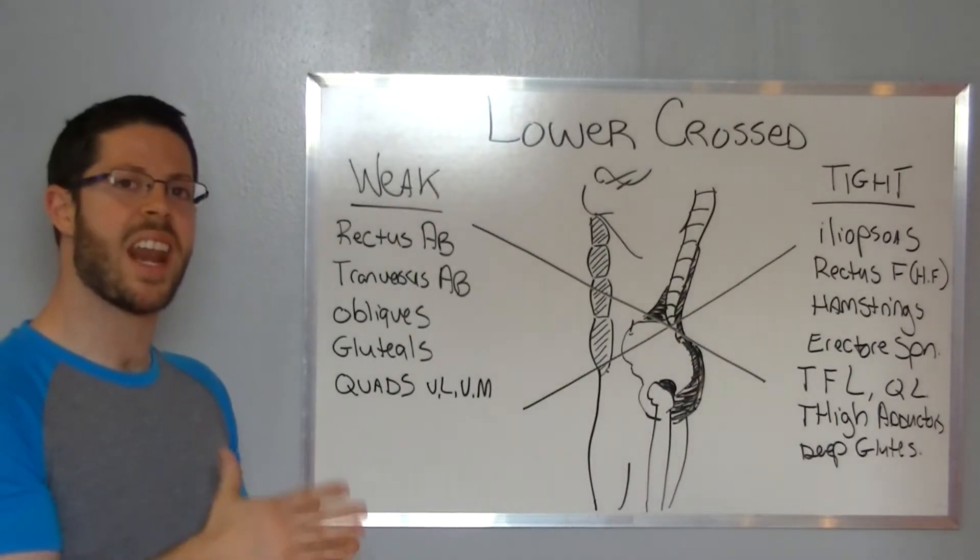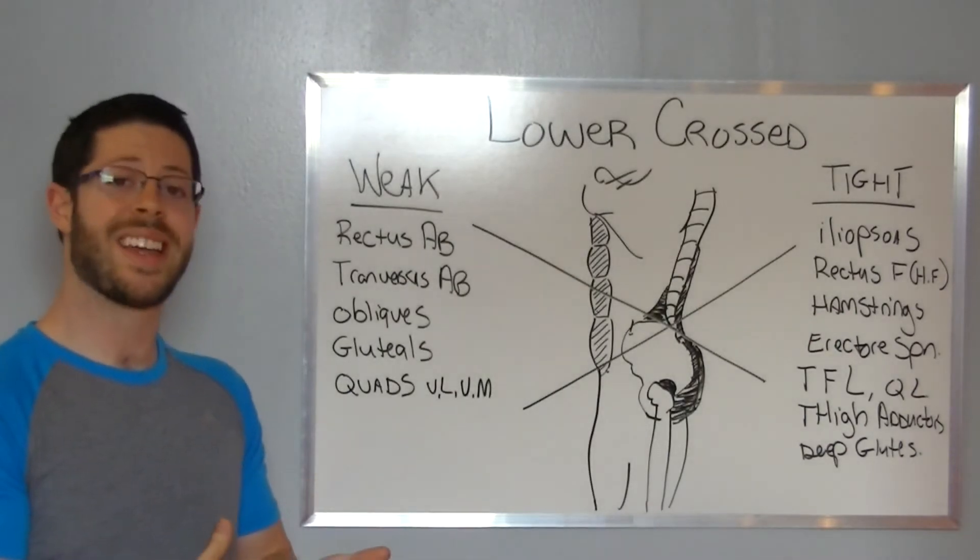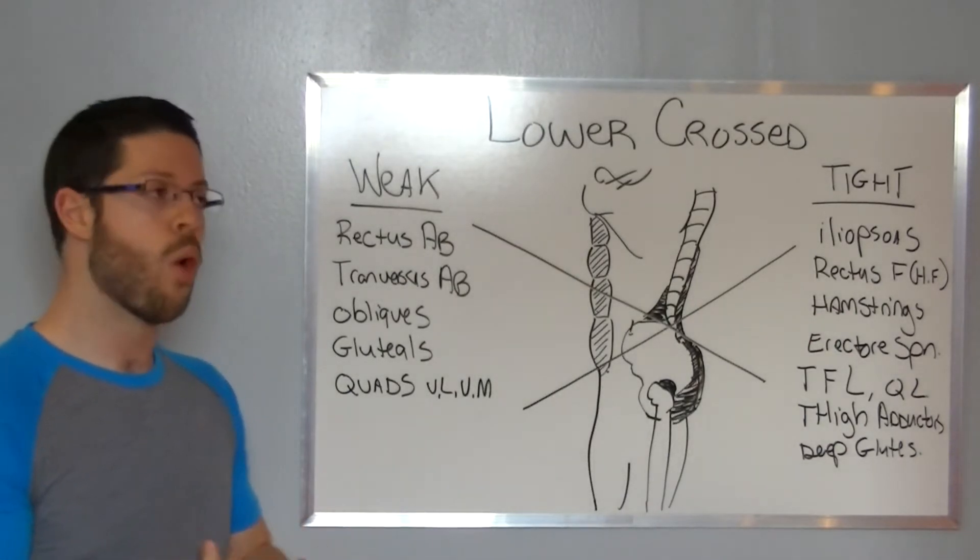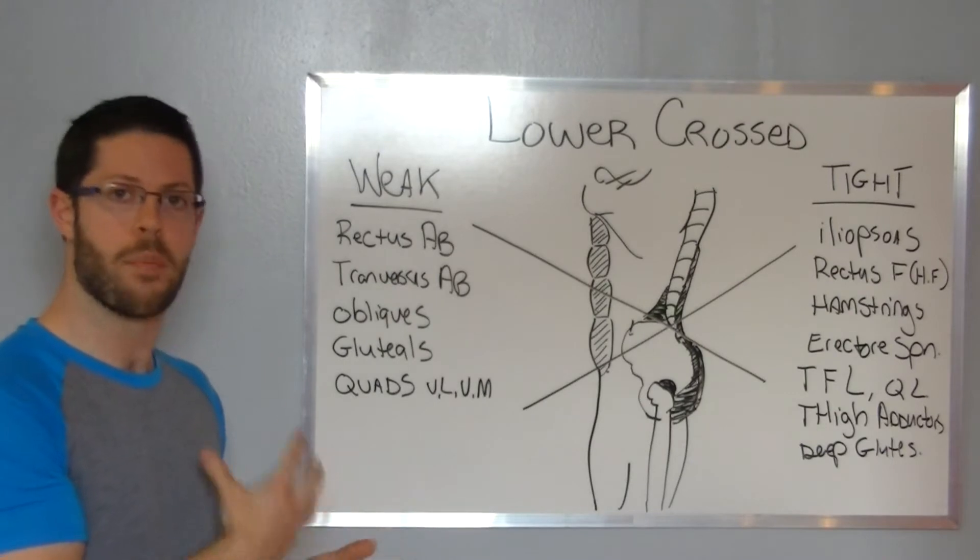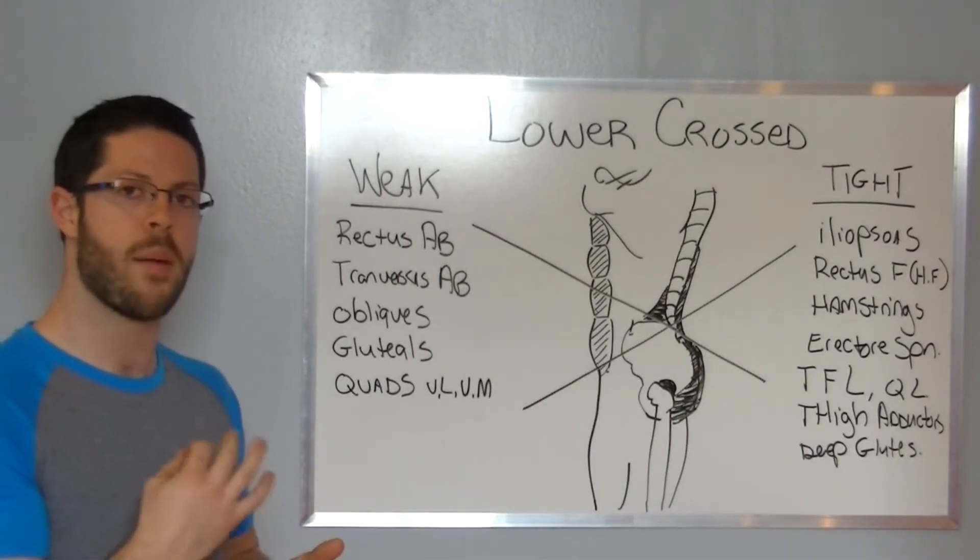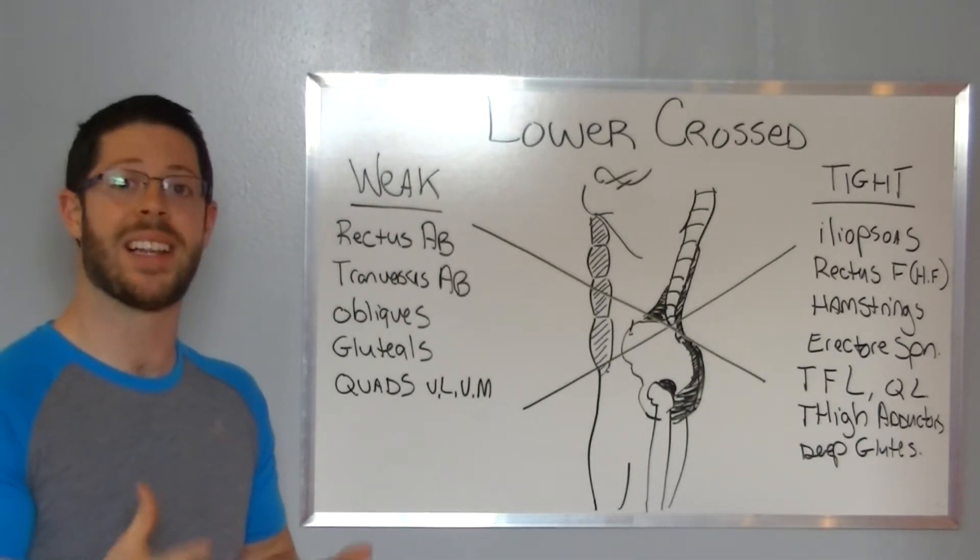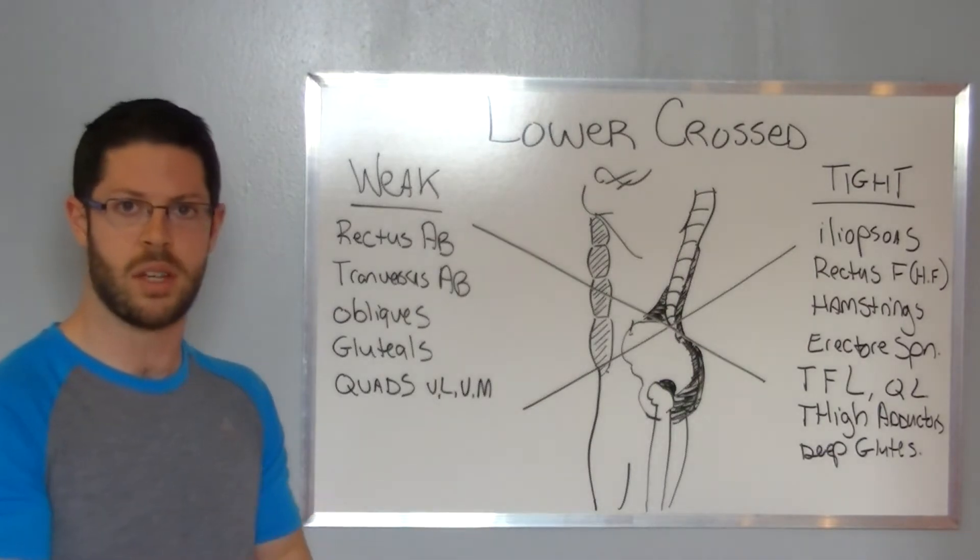Similar to the upper body, there's a tight and a weak line. Certain muscles get tight and facilitated, while their antagonists, their opposing muscles, become weak and inhibited and allow that vicious cycle to continue.